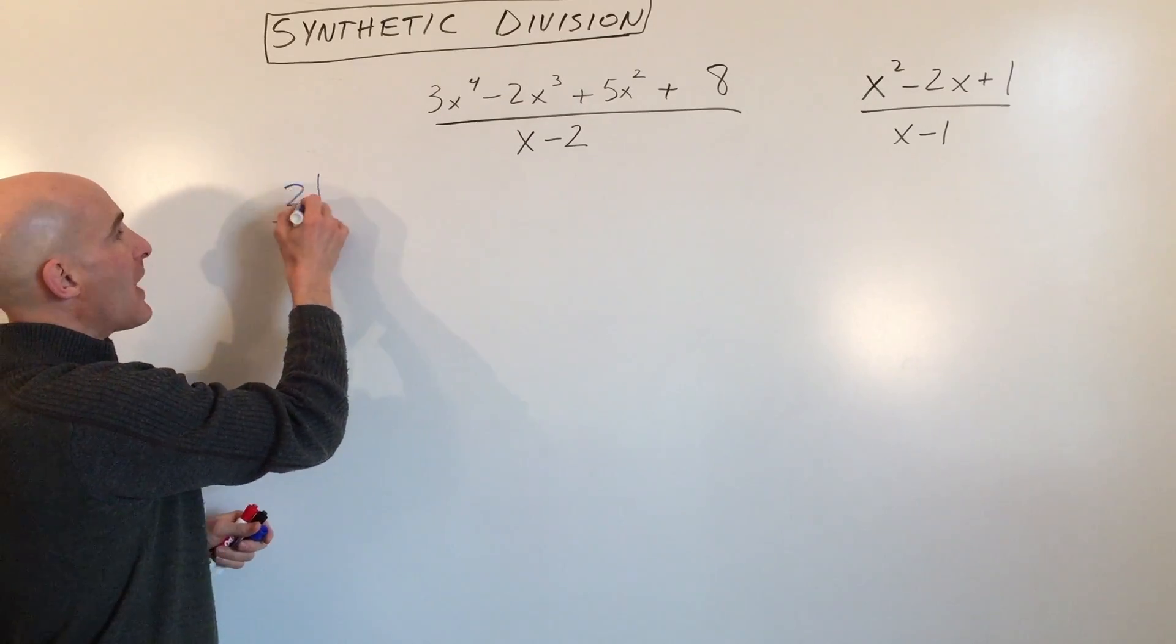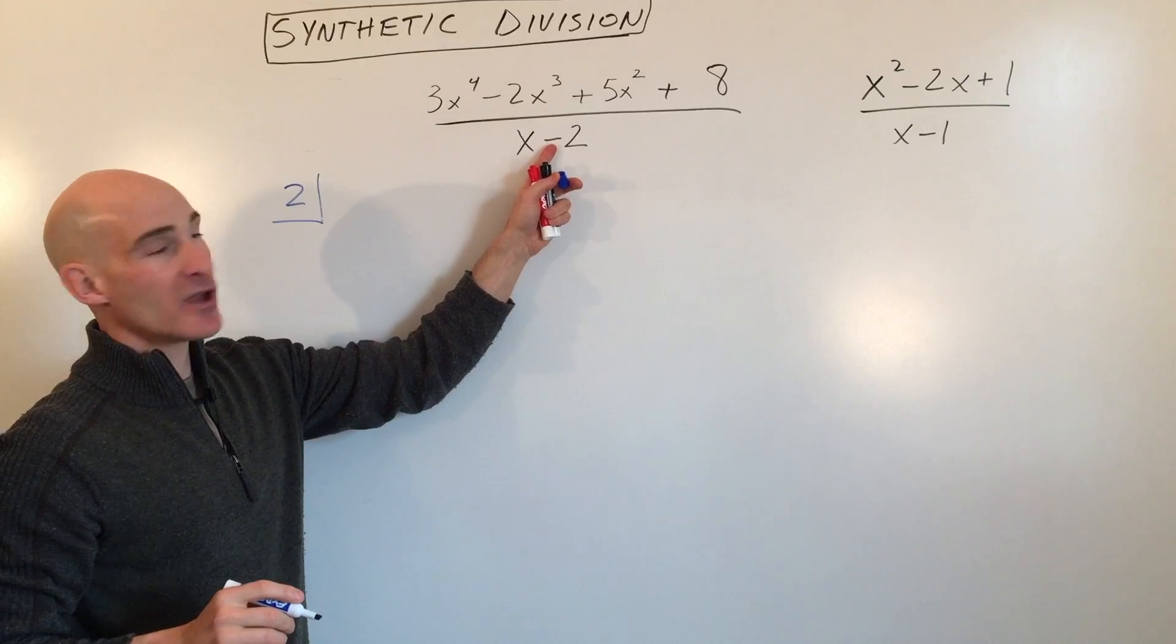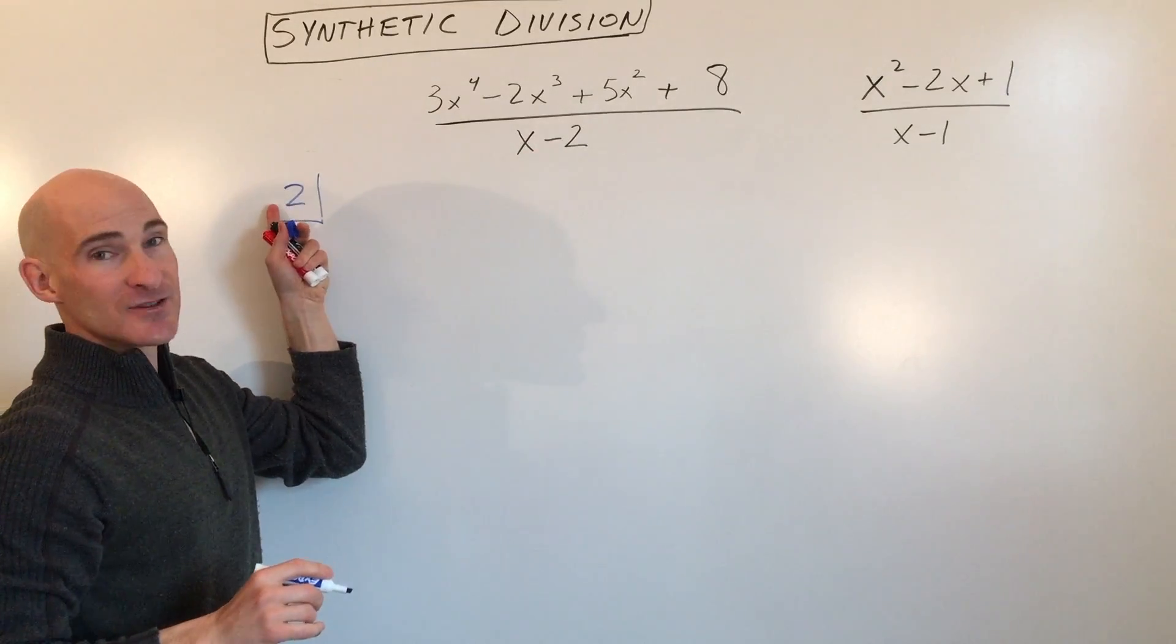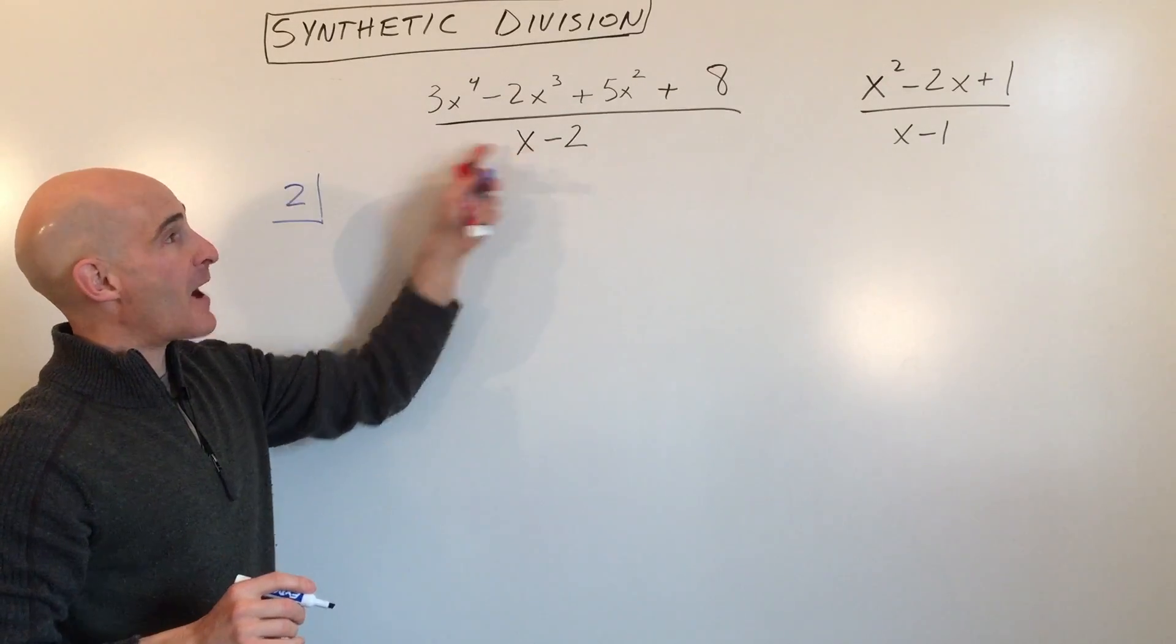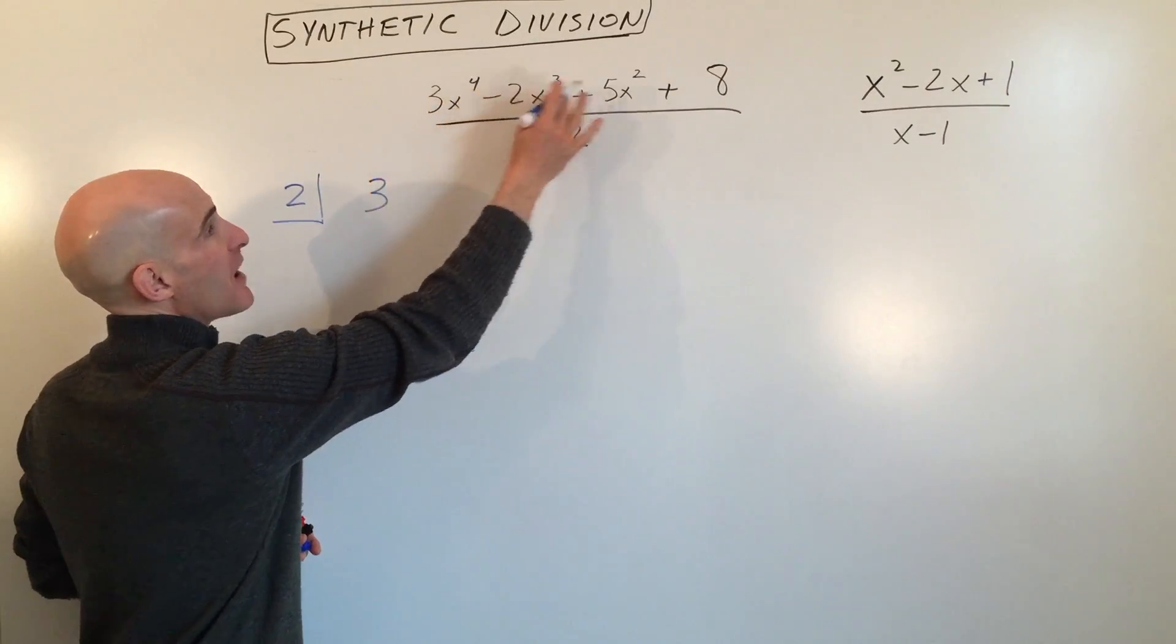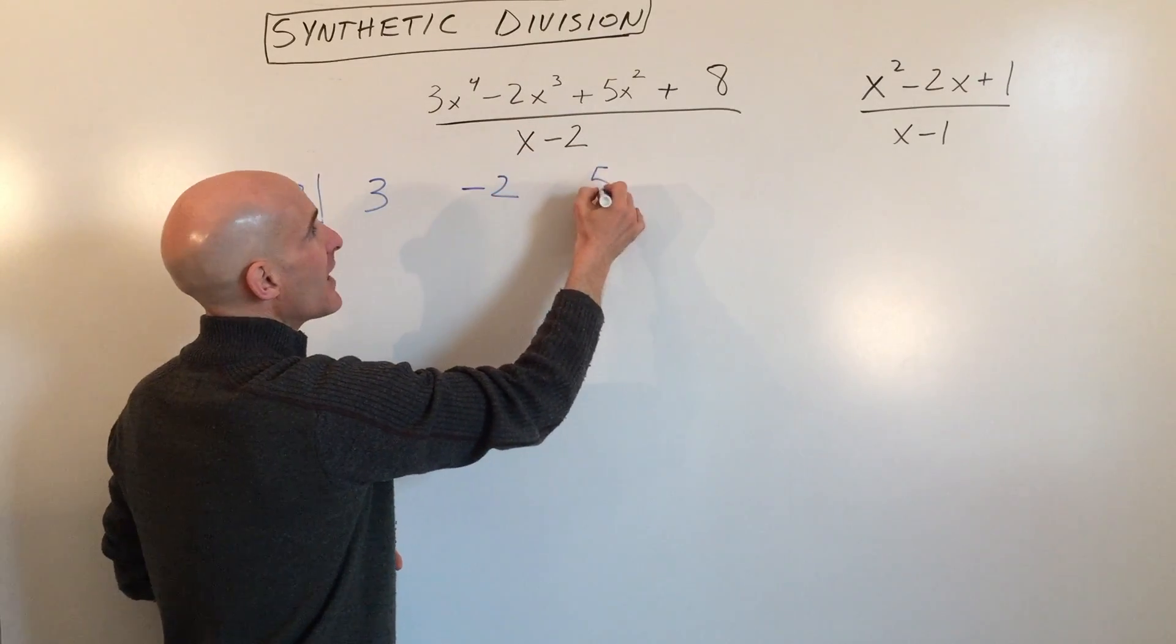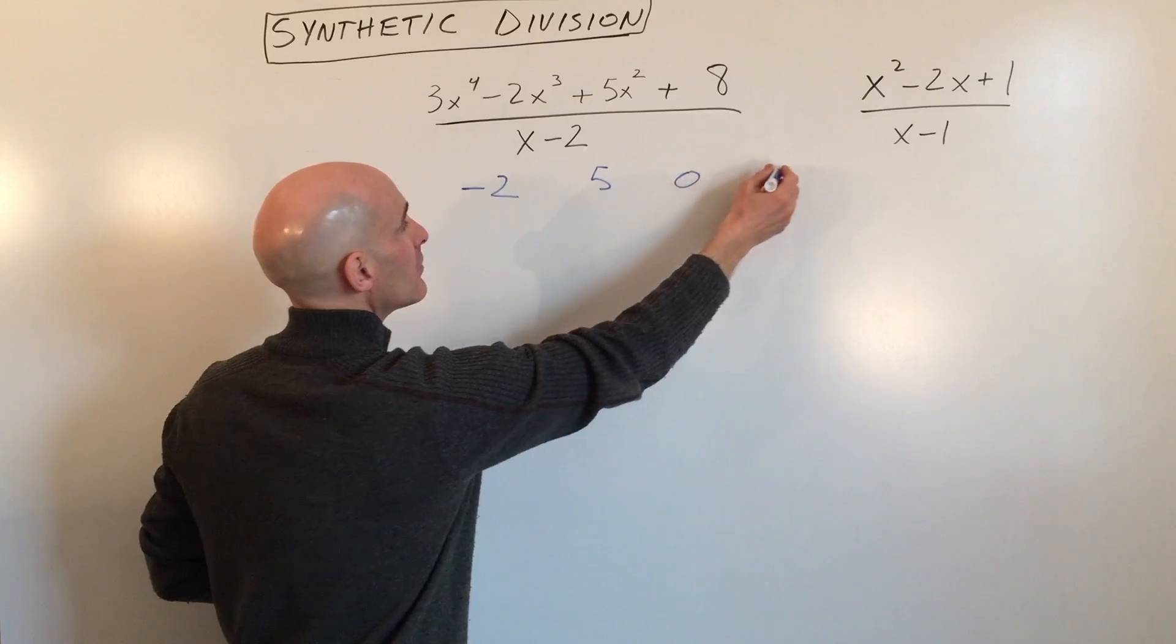Upper left-hand corner, I'm going to put positive 2. Now this is important to recognize. If we were dividing by x plus 2, we'd be using negative 2 here. So it's going to be the opposite sign. Then what we're going to do is write the coefficients of this polynomial: 3, negative 2, 5, 0, 8.